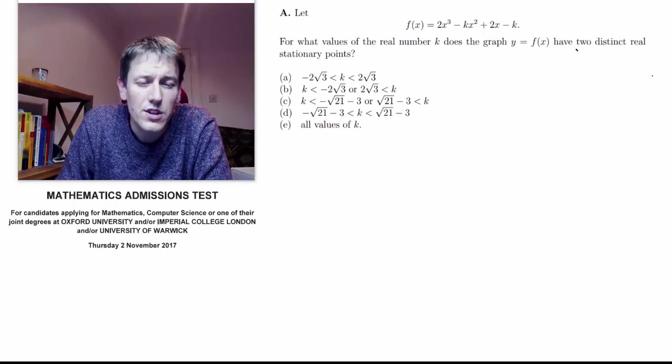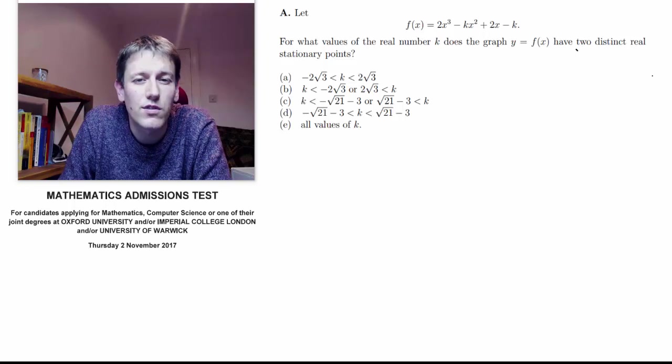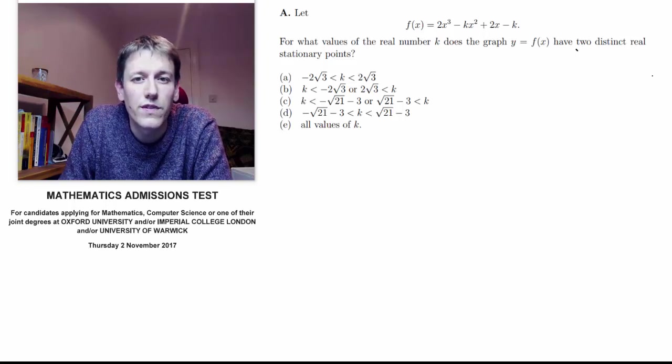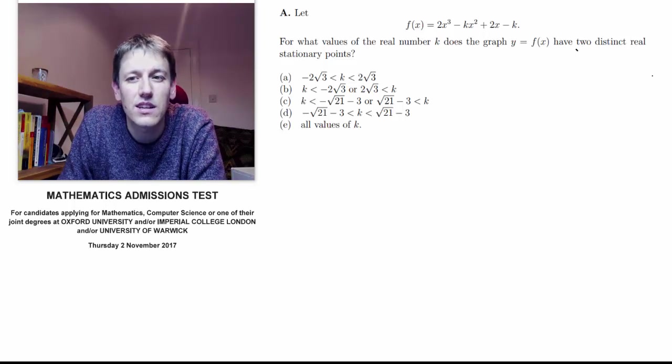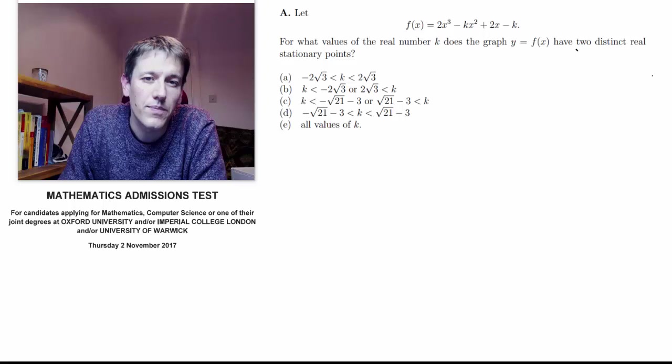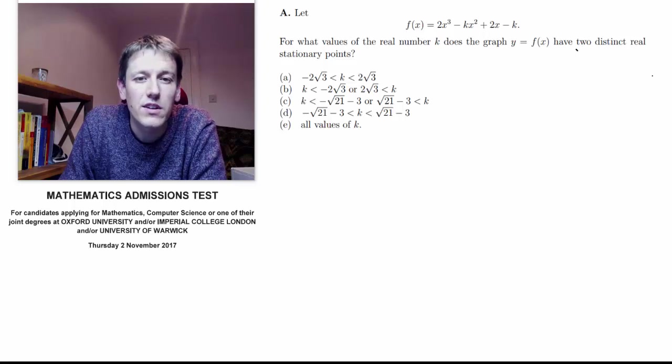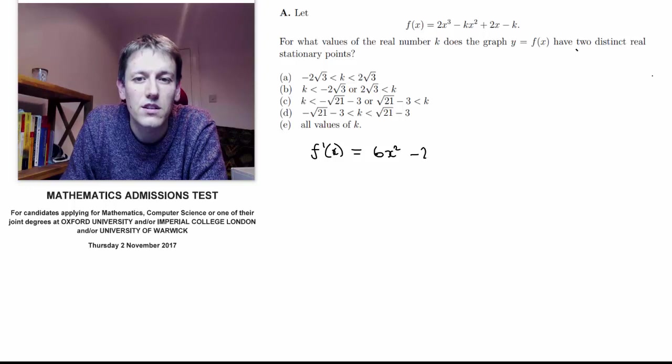So, short answer questions first, multiple choice, we've got part A of question 1. For what values of the real number k does the graph y equals f of x have two distinct real stationary points? To work out stationary points, we're looking for places where the gradient is zero, so I'm going to differentiate f of x here to get 6x squared minus 2kx plus 2.